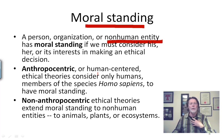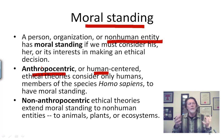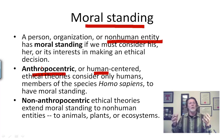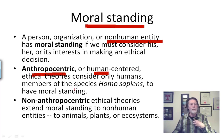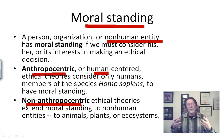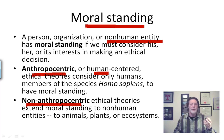Ethical theories that think only about human interests are called anthropocentric. 'Anthropos' is the same root as my name, Andrew — it's the Greek word for mankind, but we'll use it in the inclusive sense to mean humankind. So, human-centered ethical theories hold that only members of the species Homo sapiens have moral standing. But you can also have non-anthropocentric ethical theories that extend this notion of moral standing to non-human entities. These theories exist, and many people subscribe to them.